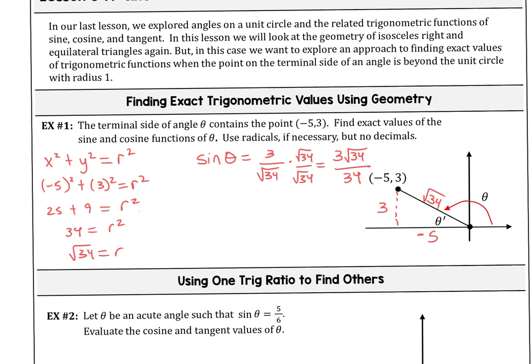We repeat that process for cosine using the x value: cosine of theta = -5/√34. Rationalizing the denominator gives us -5√34 over 34. That's how we find sine and cosine — the first step was always finding the radius since it's no longer just one.